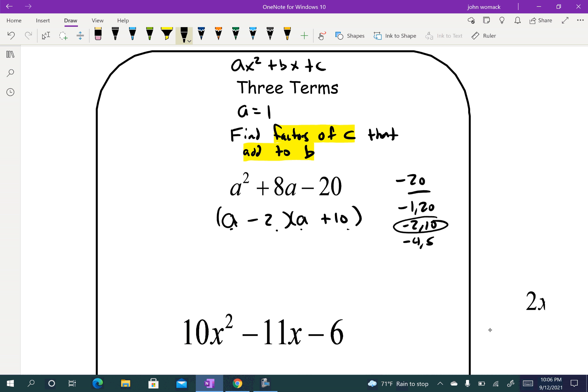These are the easiest trinomials to factor, when there is nothing here, no leading term. There really is, it's equal to 1, it just means there's nothing there and we can't see it.